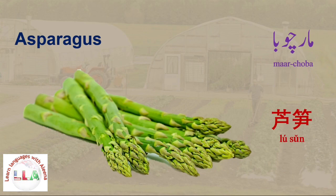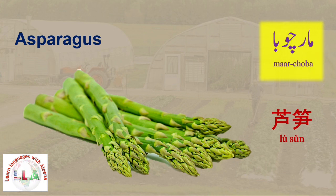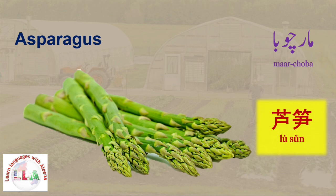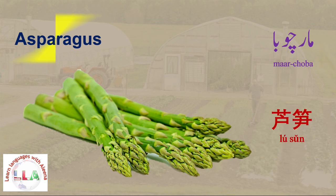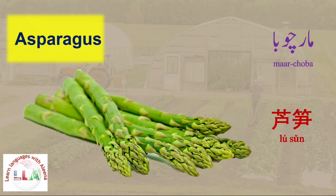In Urdu we say marjoba, marjoba. In Chinese we say lusun, lusun. In English we say asparagus, asparagus.